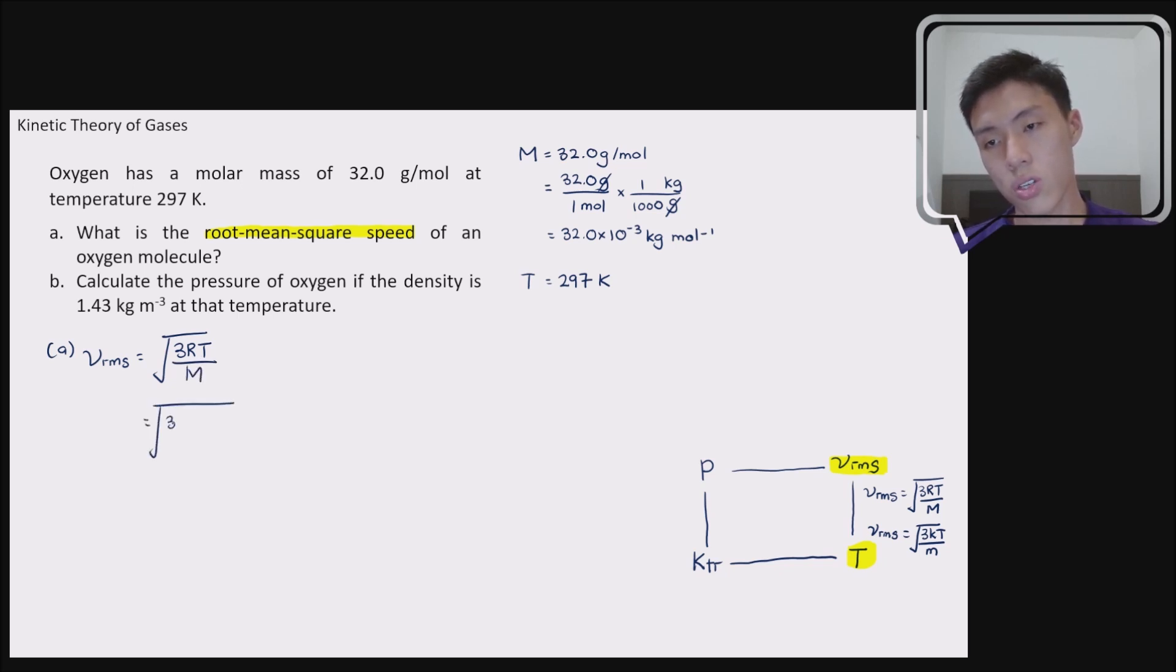So it's 3, your molar mass is 8.31, the temperature is 297 kelvin. Then your molar mass here can be converted into SI unit. So it's 32.0 times 10 to power negative 3. So through this calculation here, I believe you are able to get an answer of 481.02 meter per second. So that's for your root mean square speed.